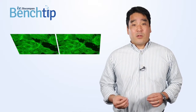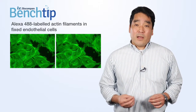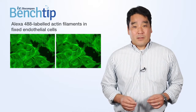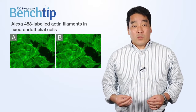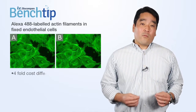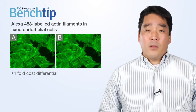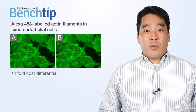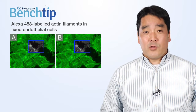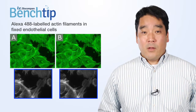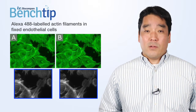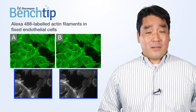For wide-field fluorescence microscopy, the typical camera will be used to image fixed cells and tissues. This example illustrates Alexa 488 labeled actin filaments in fixed endothelial cells imaged with two different cameras. There are a few key technical differences between the two cameras, resulting in a four-fold cost differential. Using standard imaging conditions, both cameras produce sharp, clear images of the actin filaments with no difference in noise or background levels. So what are the differences between the two cameras, and what are the conditions when a higher spend is necessary?